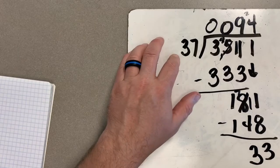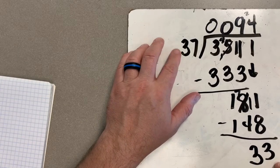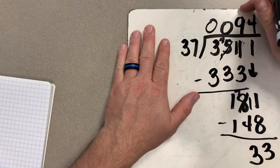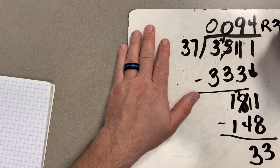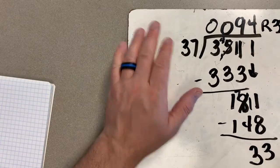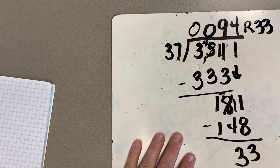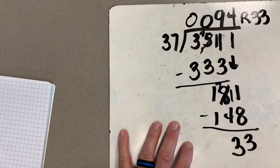Now, I'm pretty close to my 37, but 33 is less than 37. And that means I can't take another full group of 37 out of this big old number. So there we go, 94 with a remainder of 33.